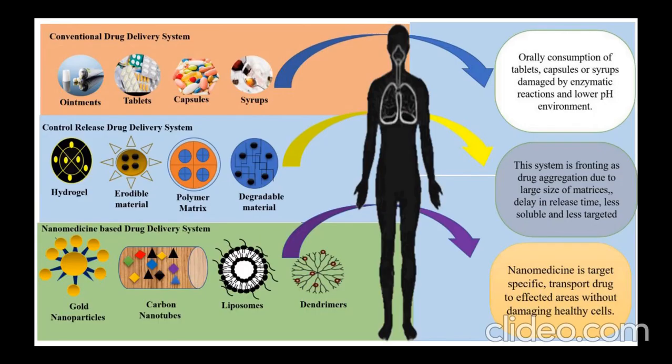There are different types of drug delivery systems. Conventional drug delivery systems like ointments, tablets, capsules, and syrups — when consumed orally — can be damaged by enzymatic reactions and low pH environments. Controlled release drug delivery systems like hydrogels, erodible materials, polymer matrices, and degradable materials suffer from drug aggregation due to large matrix size, delayed release time, poor solubility, and less targeted delivery.